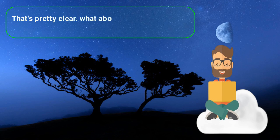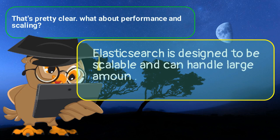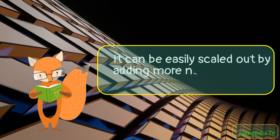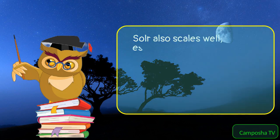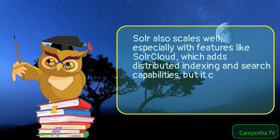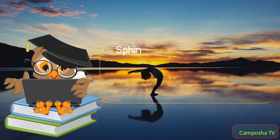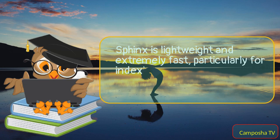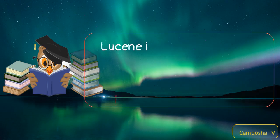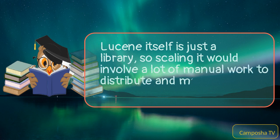What about performance and scaling? Elasticsearch is designed to be scalable and can handle large amounts of data and heavy write loads. It can be easily scaled out by adding more nodes to the cluster. Solr also scales well, especially with features like SolrCloud, which adds distributed indexing and search capabilities, but it can be a bit more complex to set up and manage compared to Elasticsearch. Sphinx is lightweight and extremely fast, particularly for indexing and search operations, but it might not be as easy to scale out as Elasticsearch. Lucene itself is just a library, so scaling it would involve a lot of manual work to distribute and manage indexes across multiple servers.